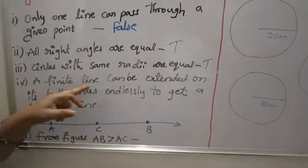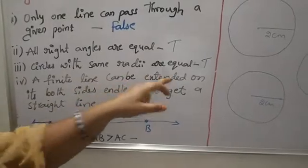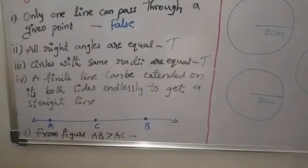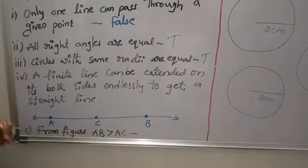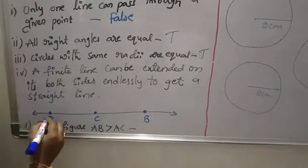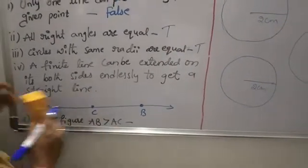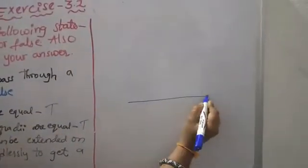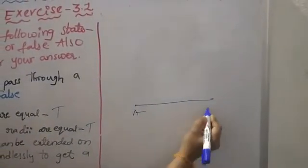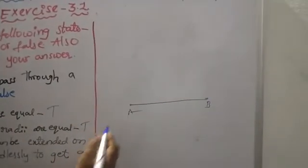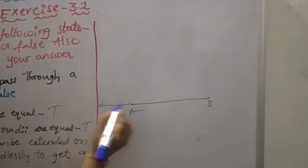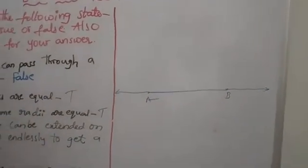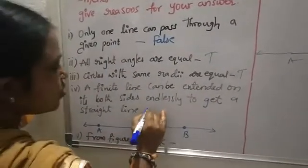Next: a finite line can be extended on both sides endlessly to get a straight line. For example, taking line AB as a finite line with some measurement — if we extend it endlessly on both sides, we get a straight line. So it is also true.